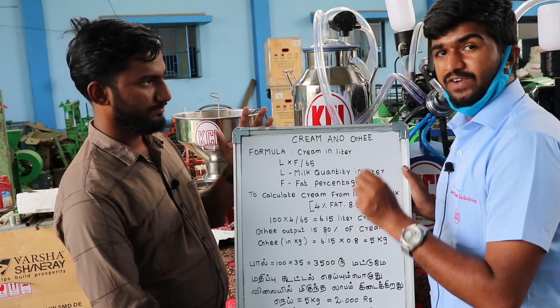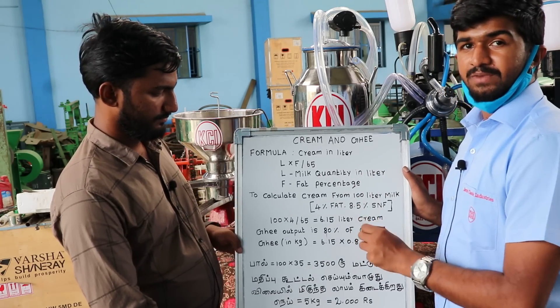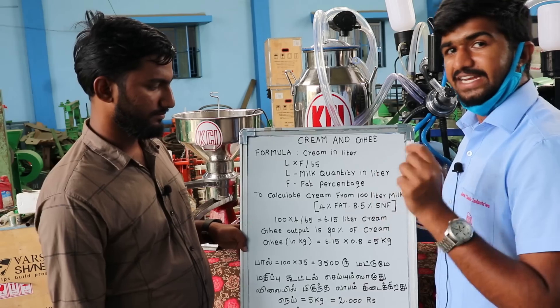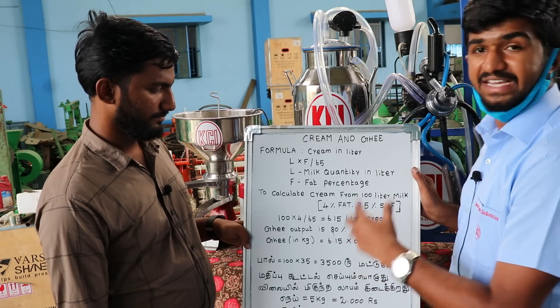We can get ghee from the cream. In the 6.15 liters of cream, we can get ghee — that is 80% of 6.15 liters.